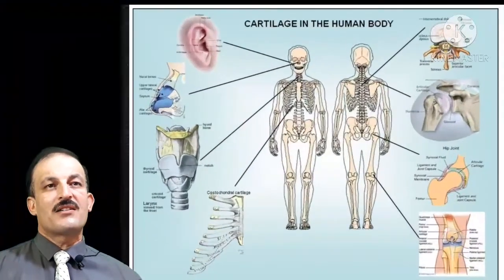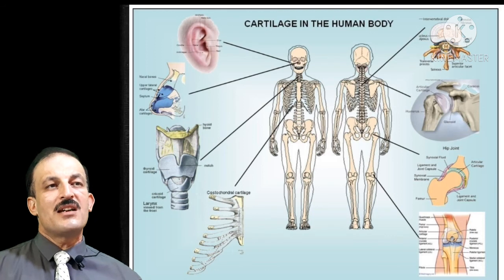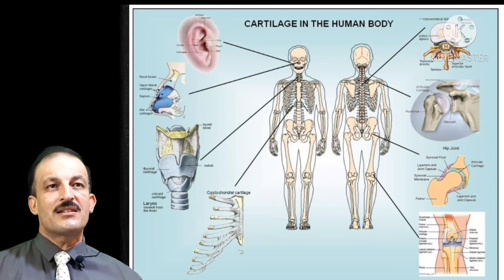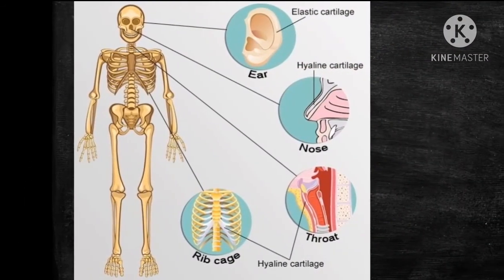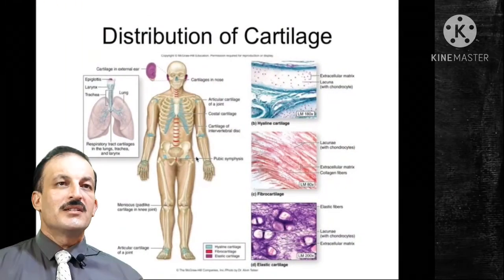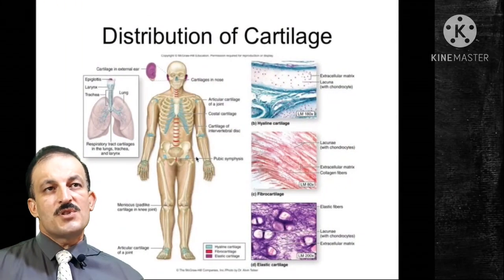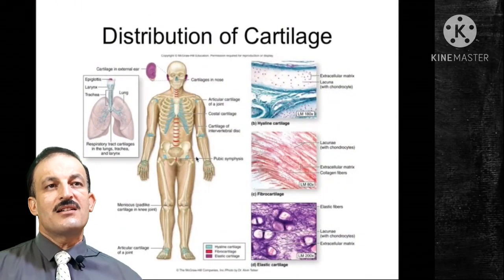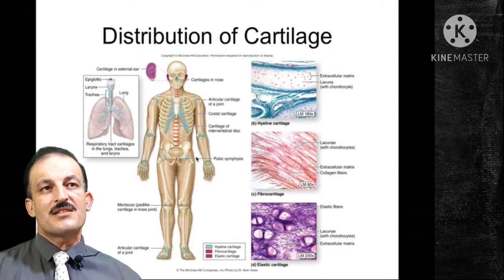Another figure presents the location of the main three types of cartilage: elastic in the ear, hyaline in the nose, throat, and ribcage. The distribution of cartilage is also shown in this figure.